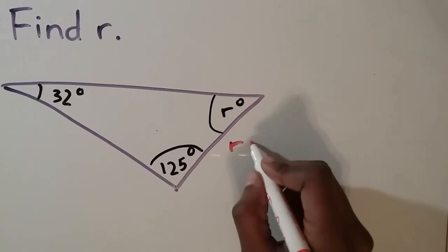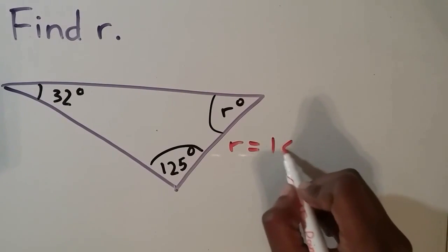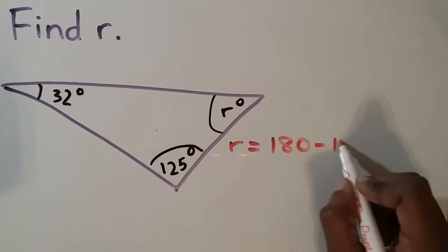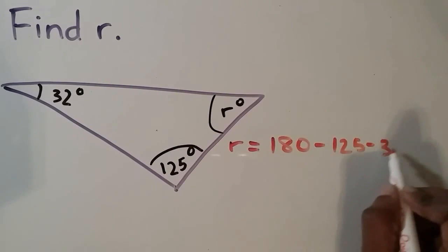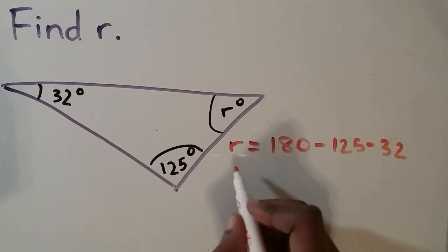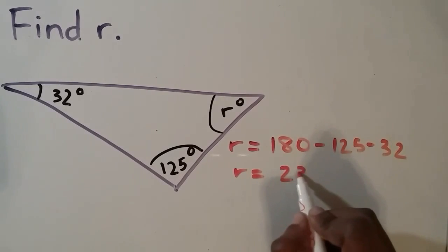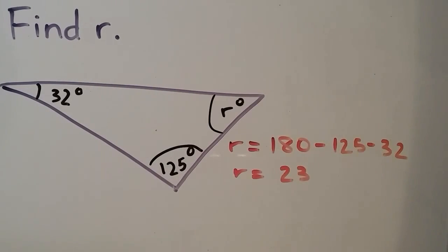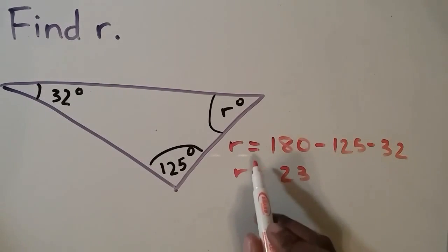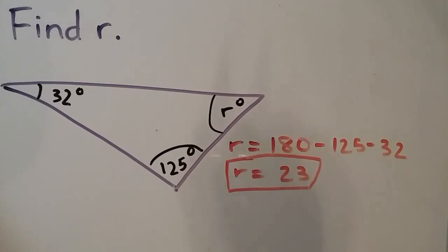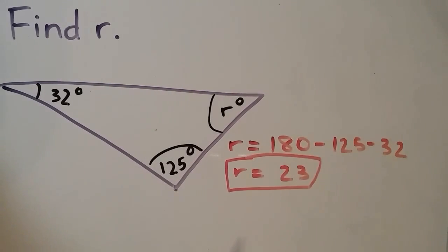Okay, so we're being asked to find r, and we happen to know two degrees of the triangle, 32 and 125. We're going to subtract those two degrees from 180. When we subtract 32 and 125 from 180, we get 23.